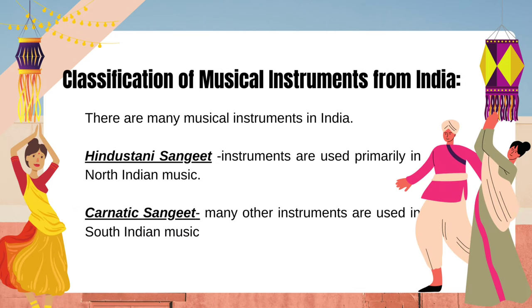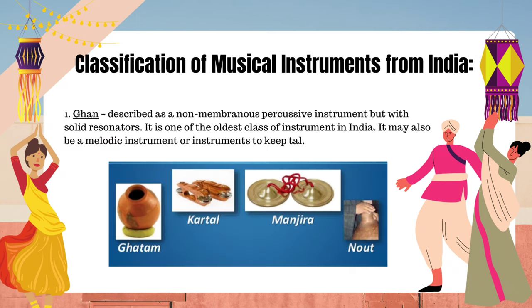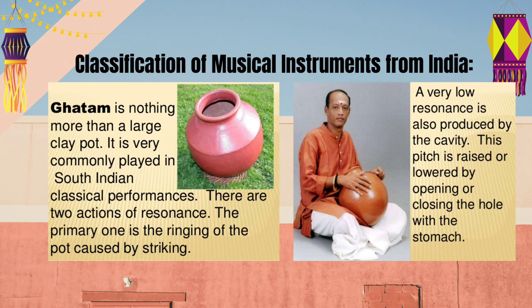Instrumental music: there are many musical instruments in India. Some instruments are used primarily in North Indian music (Hindustani Sangeet), while many others are used in South Indian music (Carnatic Sangeet). Instrumental music is often similar to vocal music but sometimes has distinctive instrumental styles. There are five known traditional systems for classification of instruments. Ghan: described as a non-membranous percussive instrument with solid resonators, it is one of the oldest classes of instrument in India. Ghatam is nothing more than a large clay pot, very commonly played in South Indian classical performances. There are two actions of resonance — the primary one is the ringing of the pot caused by striking, and a very low resonance is produced by the cavity. This pitch is raised or lowered by opening or closing the hole with the stomach.